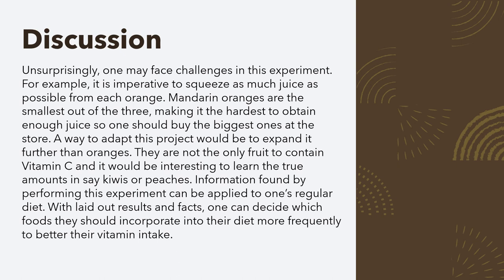In this experiment, one may face challenges. It is really important to squeeze as much juice as you can from each orange — I would recommend hand squeezing rather than using a juicer because you can squeeze it even more with your fingers. Mandarin oranges were the absolute hardest to juice because they're so small and don't contain as much juice, so you want to buy the biggest ones you can find. A way to adapt this project would be to expand it further than oranges, as they're not the only fruit containing vitamin C — it would be interesting to test kiwis or peaches.